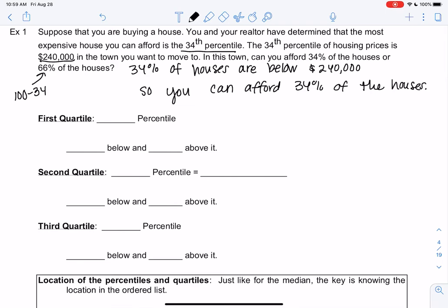Let's define these special percentiles, and we call them quartiles. Quartiles is cutting it into fourths, so it'll be 25, 50, and 75.